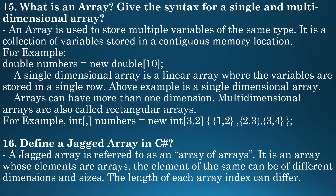Arrays can have more than one dimension. Multidimensional arrays are also called rectangular arrays. For example, int with a comma in brackets specifying two dimensions, then the array name is numbers, created using the new keyword with size specified as three and two inside square brackets, and values specified in curly brackets. A jagged array is referred to as an array of arrays — it is an array whose elements are arrays. The elements can be of different dimensions and sizes, and the length of each array index can be different.